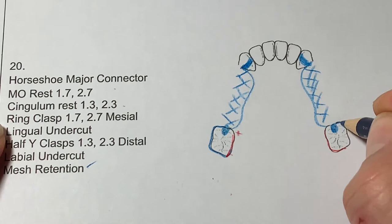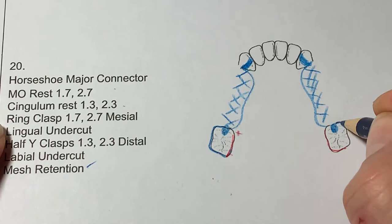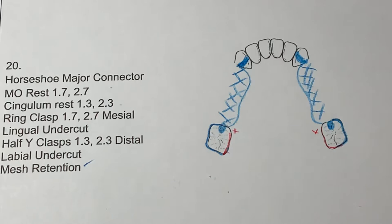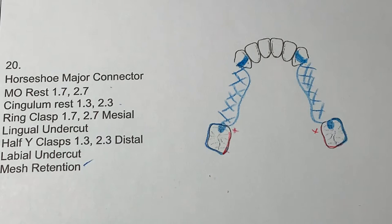So identify mesiolingual, and then we'll bring the red arm. Now, don't connect it. If you notice, I left a space here. It's very important. Otherwise, I won't know which way the ring clasp comes from, the buccal or the lingual. And if you're a little bit sloppy, put an X. So I know where the retentive arm ends.